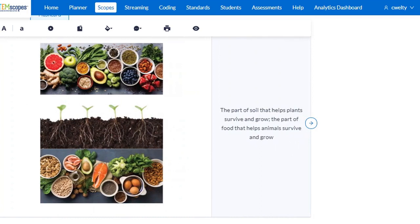The next definition says the part of soil that helps plants survive and grow, the part of food that helps animals survive and grow. Pause for more time. This is called the nutrients. It's important we get our nutrients to help us survive.